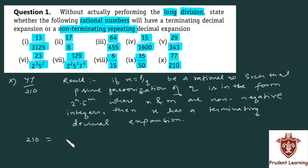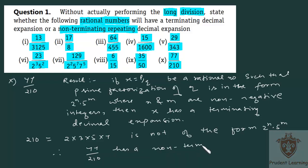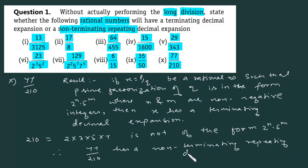So the denominator is 210. Factorizing, 210 can be written as 2 into 3 into 5 into 7. Since 2 into 3 into 5 into 7 is not of the form 2 to the power of n into 5 to the power of m, therefore 77 upon 210 has a non-terminating repeating decimal expansion.